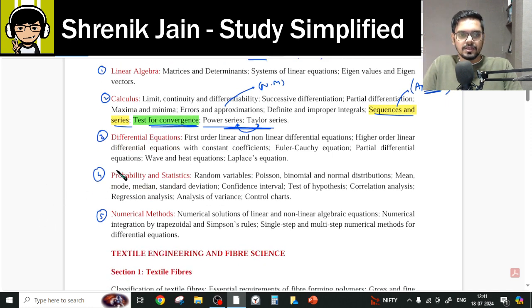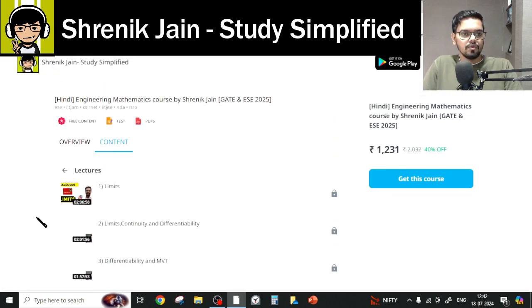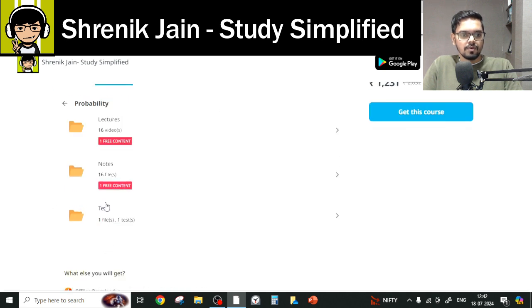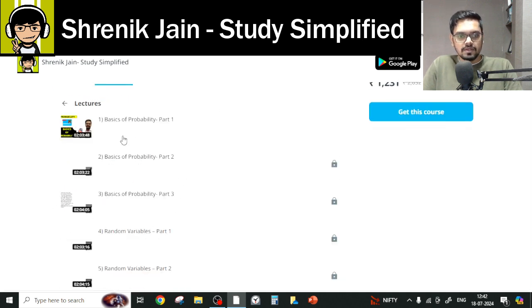Then comes the Probability confusion. That in Probability, should we study every chapter? Because in some videos, you have told this topic is omitted, that topic is omitted. But as per your syllabus, everything is there. Hypothesis Testing, Correlation Regression, Confidence Interval, Random Variable, Statistics. So everything is there. If you go to the folder, this is your Probability folder, lectures. Now you will say basics of probability is not there, but this is the part of Aptitude, so you have to study. You got no choice.